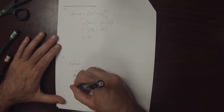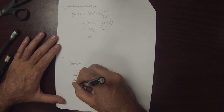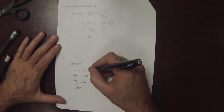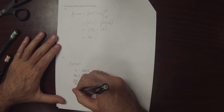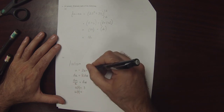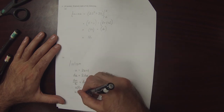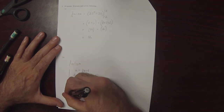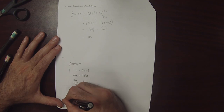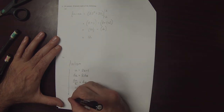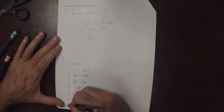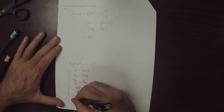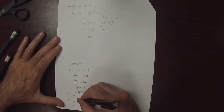We'll substitute the limits. u evaluated at 1: plugging 1 in gives 3. u evaluated at 4: plugging 4 in gives 9. So that is now the integral from 3 to 9 of 1 over u squared, times du over 2.